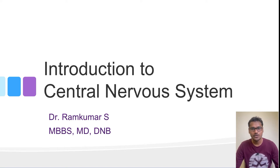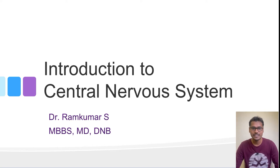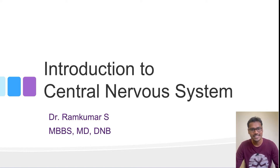Whenever you talk about the nervous system, it is basically divided into the central nervous system, the peripheral nervous system, and the autonomic nervous system. This series of lectures is going to be on the central nervous system, and we are going to see it in a particular sequence which I am going to discuss today.